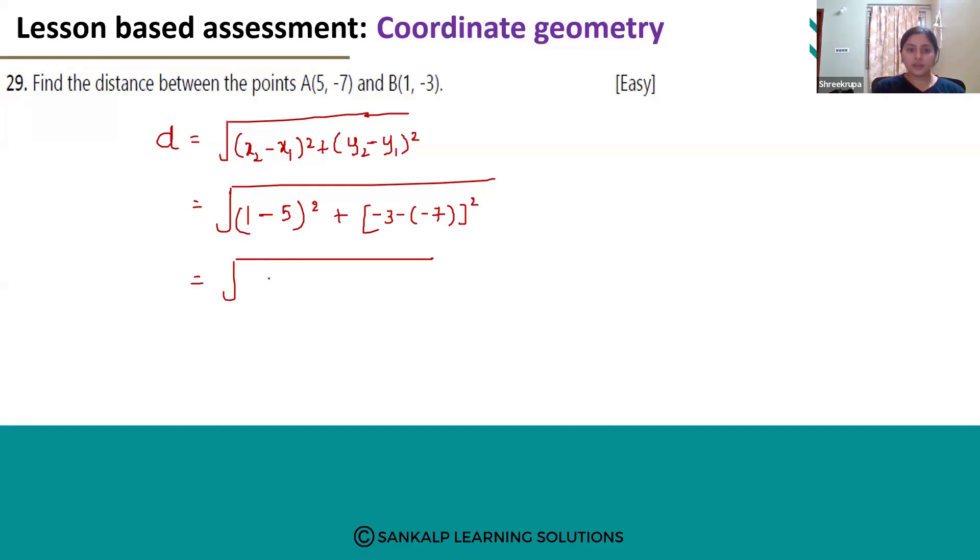1 minus 5 is -4 whole square plus -3 and if you open this bracket minus into minus will become plus 7 whole square. That is -4, -4 square is 16, minus 3 plus 7 is plus 4 whole square.